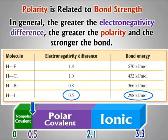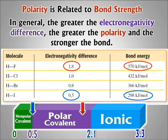The electronegativity difference for H-F turns out to be 1.8 — way over to the right, much closer to the upper limit of polar covalent. That is an extremely polar bond. Its bond energy is 570 kilojoules per mole — almost twice the 298 of H-I. So it would take twice as much energy to break the H-F bond as the H-I bond. That bond is much, much stronger.